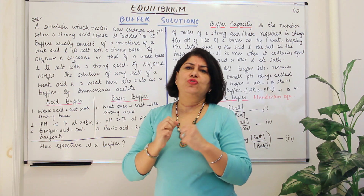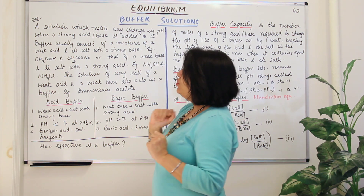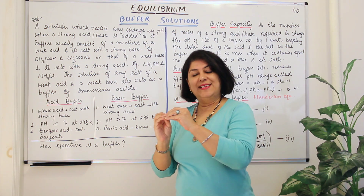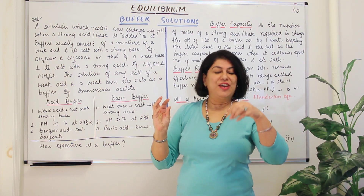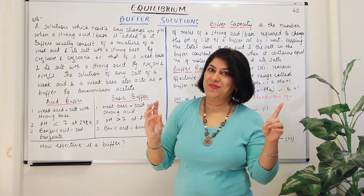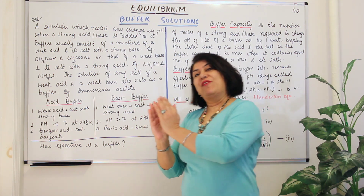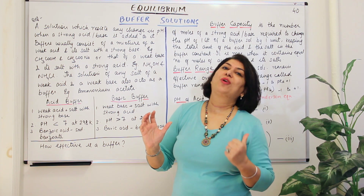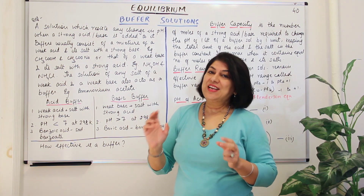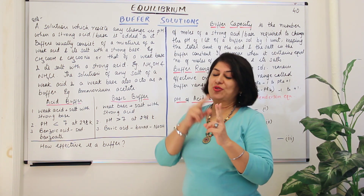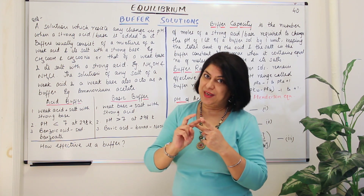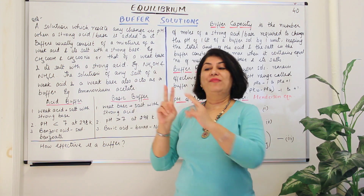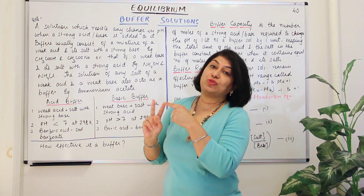So what would this buffer solution be made up of? It is usually made up of a mixture of a weak acid and its salt with a strong base, or it is made up of a weak base with its salt with a strong acid. So there are two types of buffers: acid buffer and basic buffer, depending on whether you took the weak acid or the weak base.